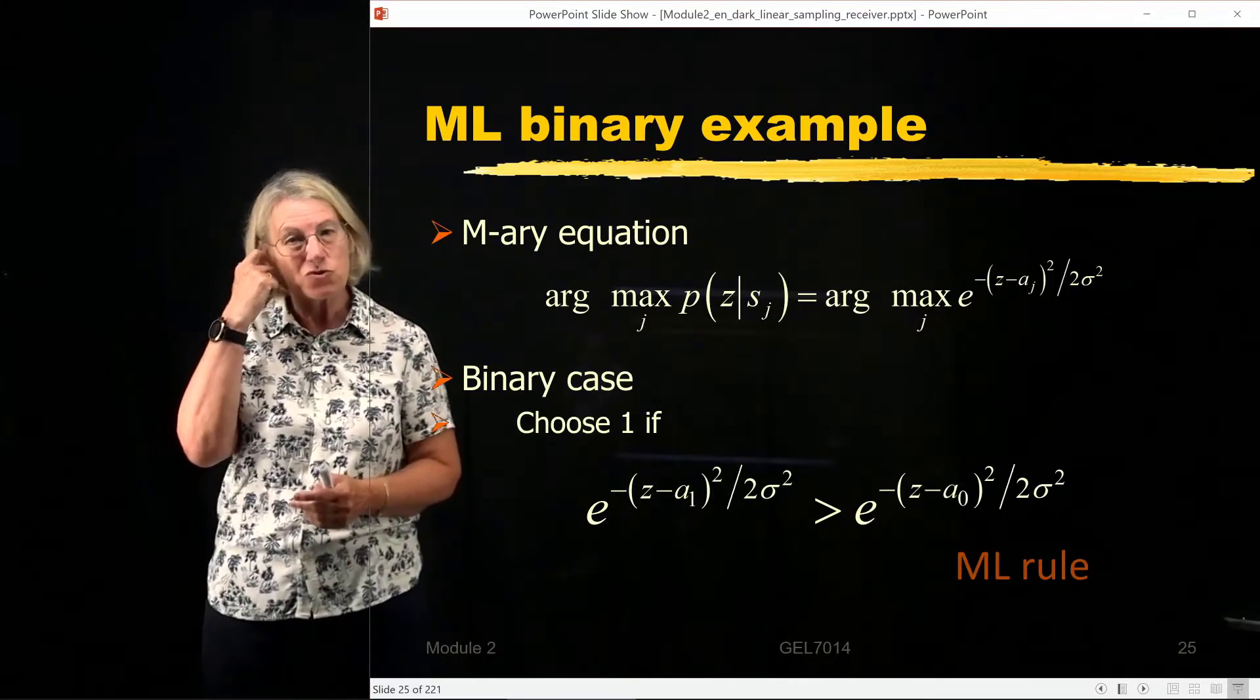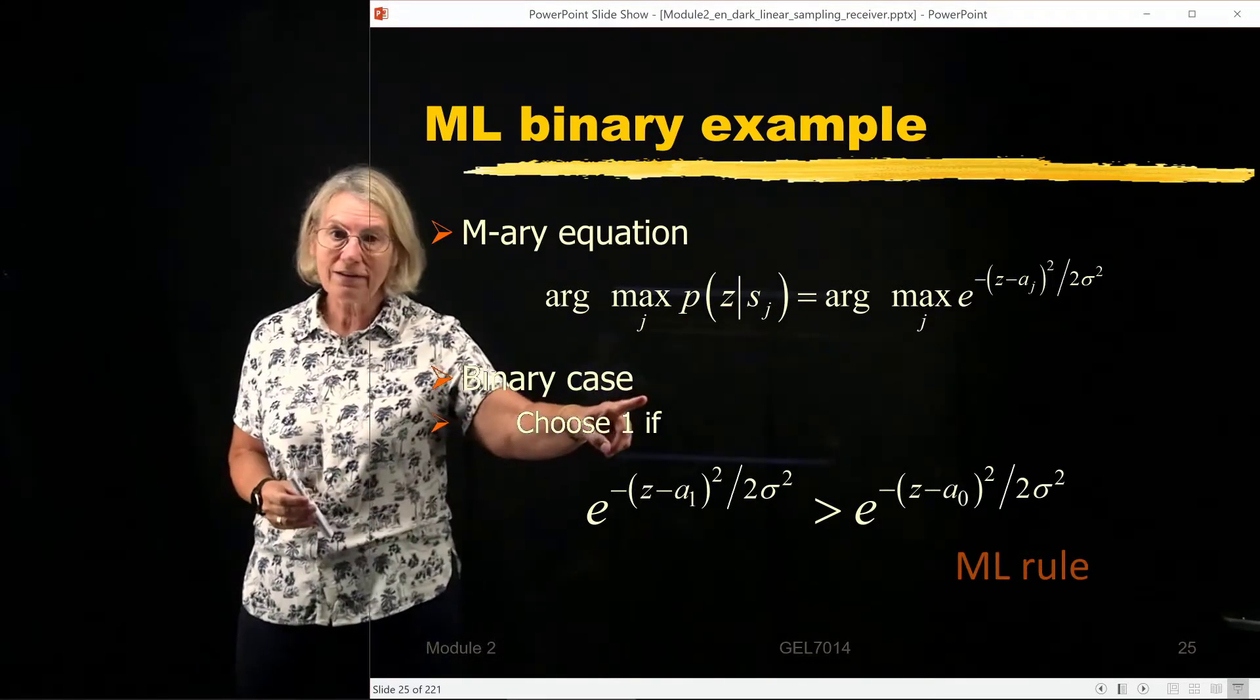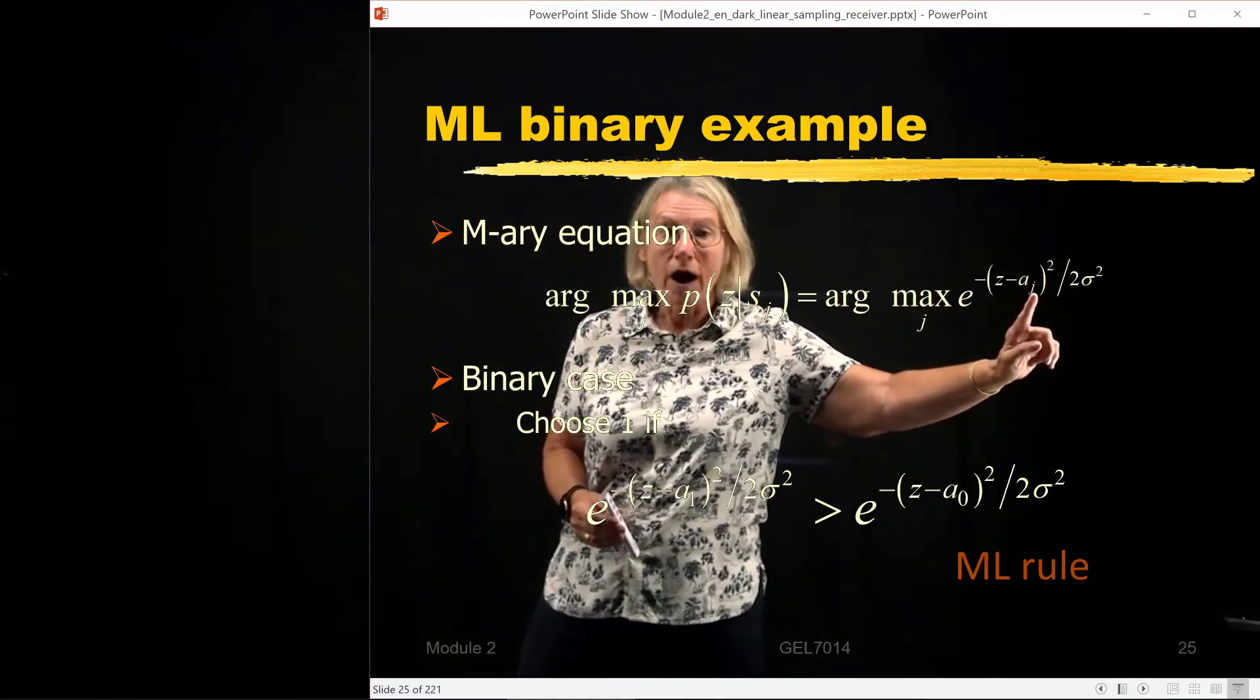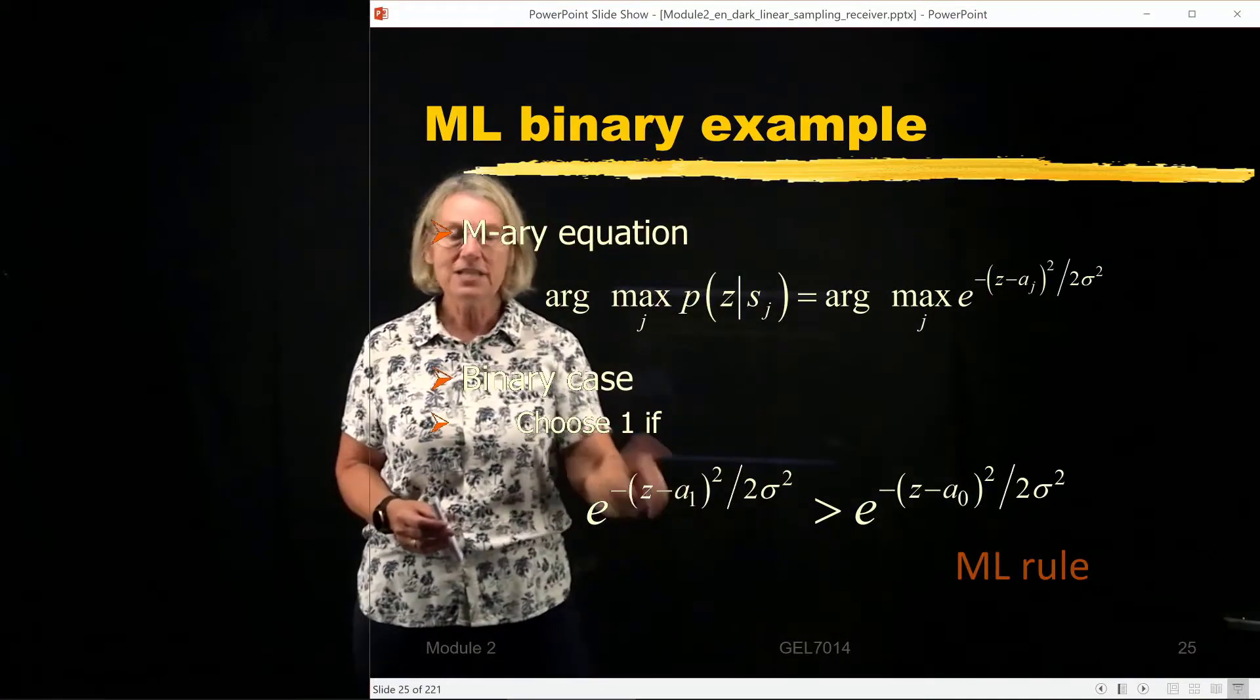So I'm going to choose 1 if this exponential when I put in a 1 here is bigger than the same exponential when I put in 0.